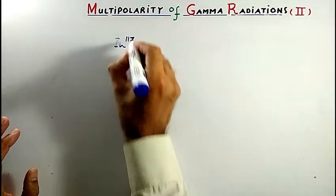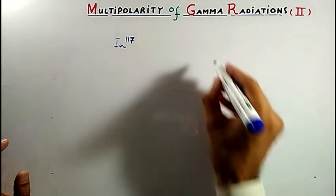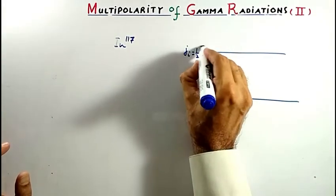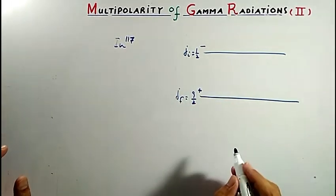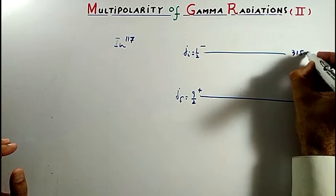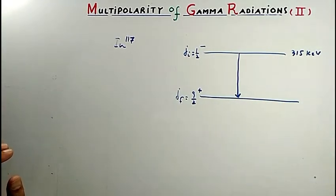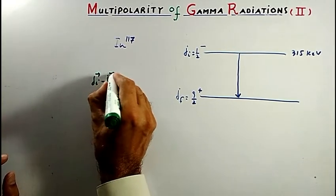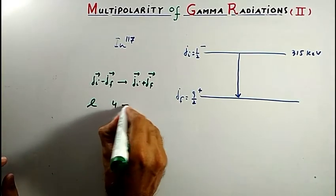Now we consider Indium-117. Indium-117 has two states: the initial state has spin parity 1/2 minus, and the final state has spin parity 9/2 plus. The initial state is at energy 315 keV. We observe that there is a parity change between these states. L will range from |J_i minus J_f| to J_i plus J_f, giving L values from 4 to 5.